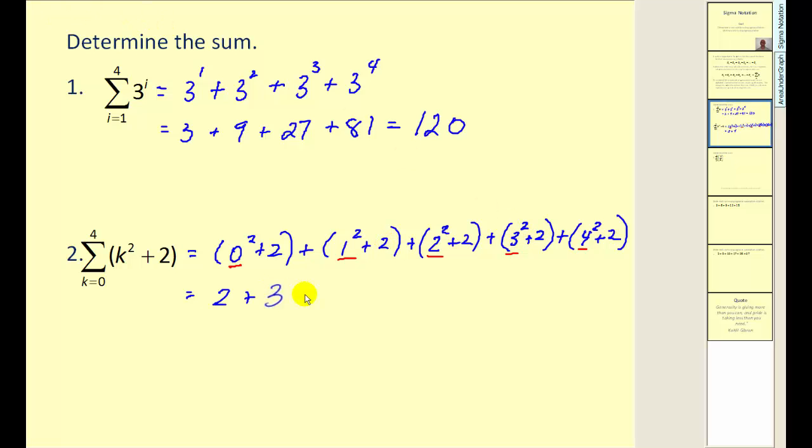1 squared plus 2, 2 squared plus 2, 3 squared plus 2, and 4 squared plus 2. Now we find the sum, which is 40.